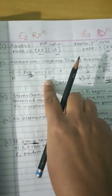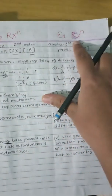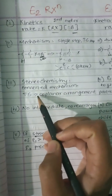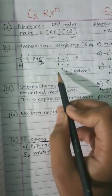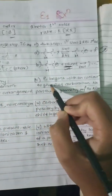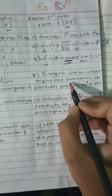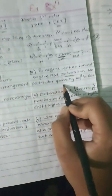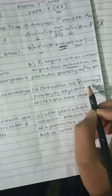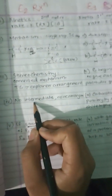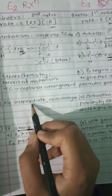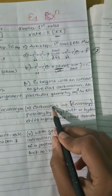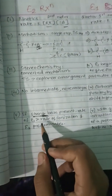In E1 there are two steps. The first step is the formation of the transition state — it is a carbocation intermediate. There is an intermediate in E1, and rearrangement is possible. There is no intermediate in E2. E2 requires a strong base.